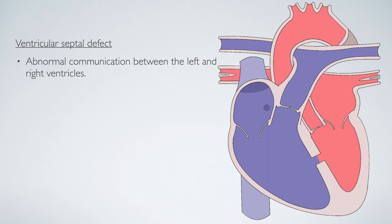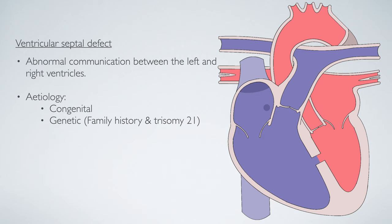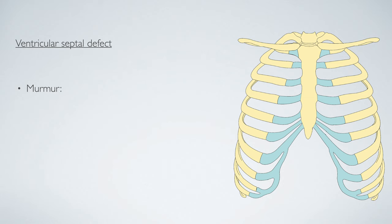Ventricular septal defects are a common type of congenital heart disease, occurring due to abnormal development of the ventricular septum early in fetal development. Genetics also contribute — the risk is increased with a strong family history and in conditions such as trisomy 21, otherwise known as Down syndrome. With ischemic heart disease, particularly myocardial infarction, reduced blood supply to the ventricular septum can cause it to rupture, producing a VSD. The clinical history may be asymptomatic but may include dyspnea and failure to thrive. The murmur is a pansystolic murmur loudest at the left sternal edge.